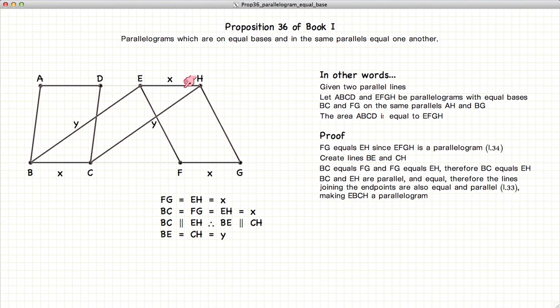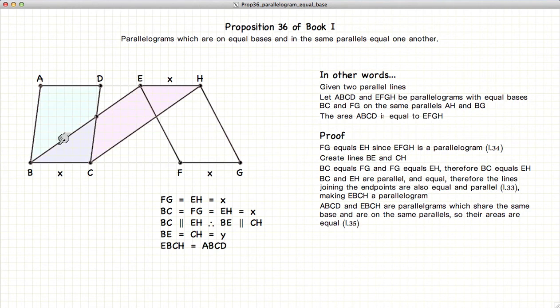So BCHE is a parallelogram with the same base as ABCD. So the area of ABCD is equal to the area of EBCH. So these two parallelograms are equal in area according to Proposition 35.